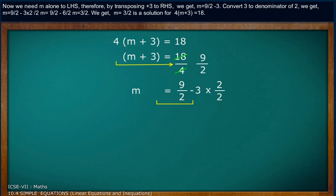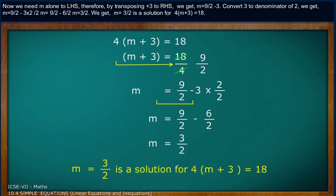We get m equals 9 by 2 minus 3 times 2 by 2. m equals 9 by 2 minus 6 by 2. m equals 3 by 2. We get m equals 3 by 2 is the solution for 4(m plus 3) equals 18.